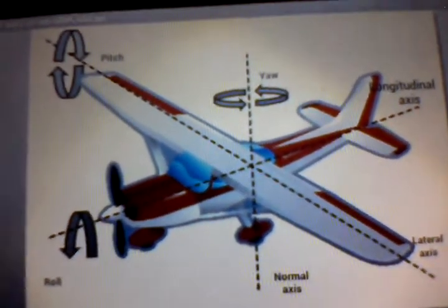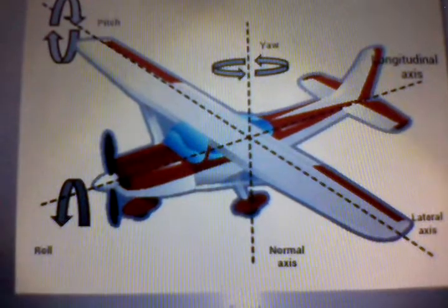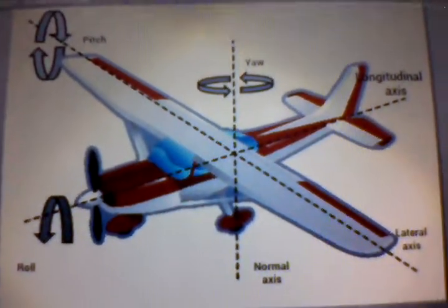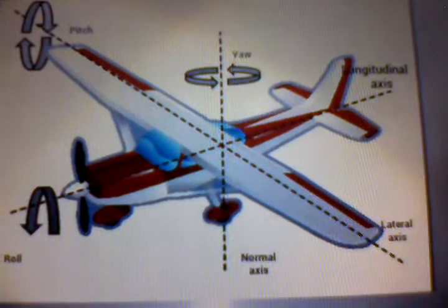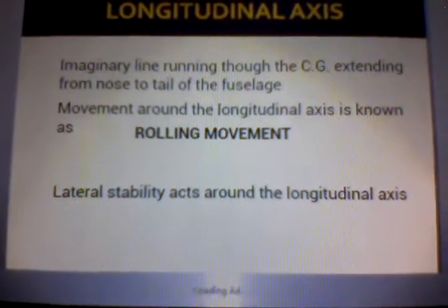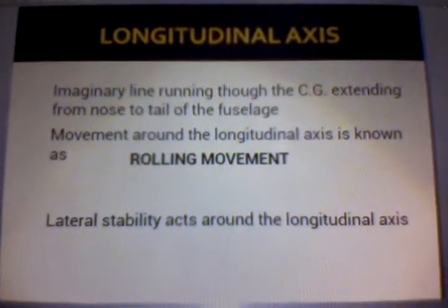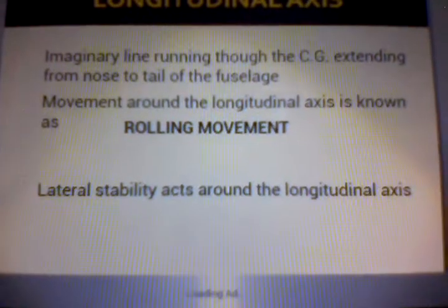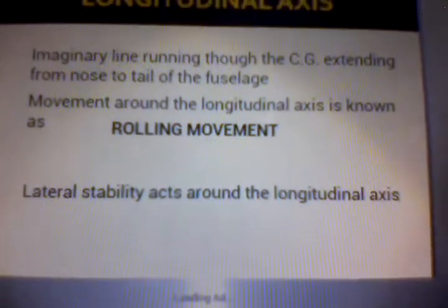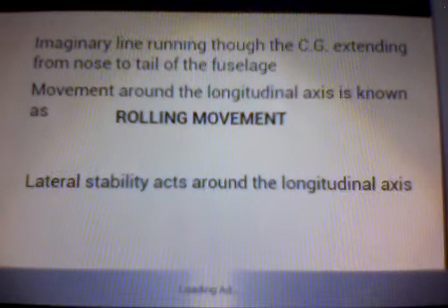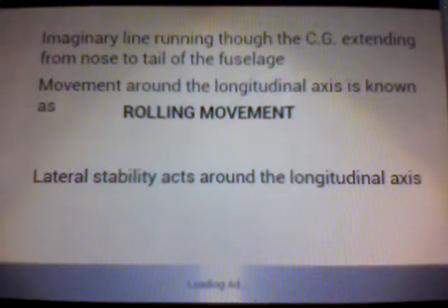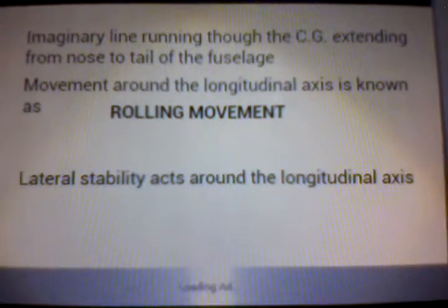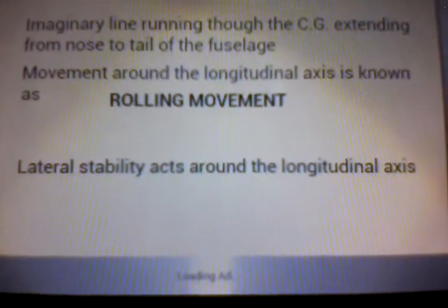The movements to talk about are: yaw movement, roll movement, and pitch movement. Going through the notes — the longitudinal axis is the line running through the CG, which is the center of gravity, extending from the nose to the tail of the fuselage. The movement around it is the rolling movement. The lateral stability acts around the longitudinal axis.